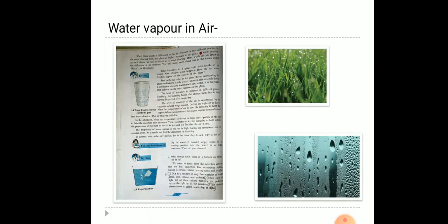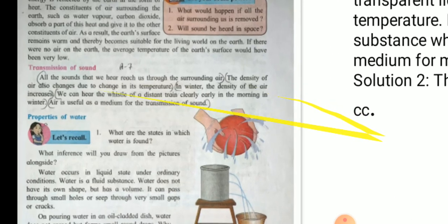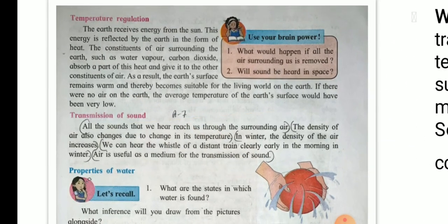Temperature regulation. The earth receives energy from the sun. This energy is reflected by the earth in the form of heat. The constituents of air surrounding the earth, such as water vapor and carbon dioxide, absorb a part of this heat and give it to the other constituents of air. As a result, the earth's surface remains warm and thereby becomes suitable for the living world on the earth. If there were no air on earth, the average temperature of the earth's surface would have been very low.